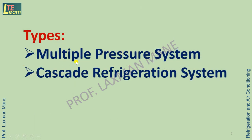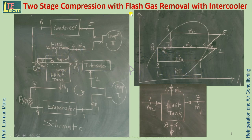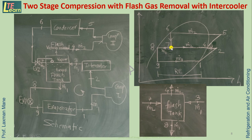Types of multiple pressure systems include the multiple pressure system and the cascade refrigeration system. Taking the example of a multiple pressure system, here is a two-stage compression system with flash gas removal and intercooler. Between the two compressors, intercooling is needed, so an intercooler is added. When the first expansion takes place and second expansion takes place, flash vapor is removed before the second expansion using a flash tank.